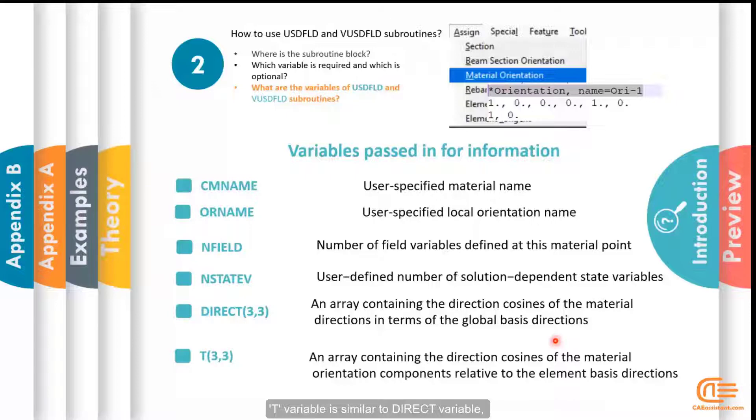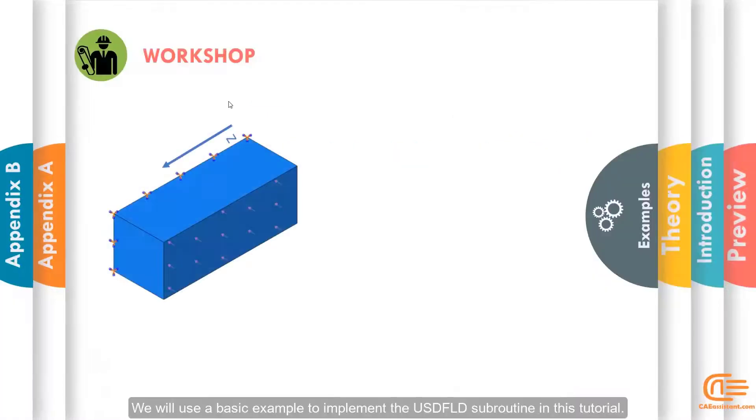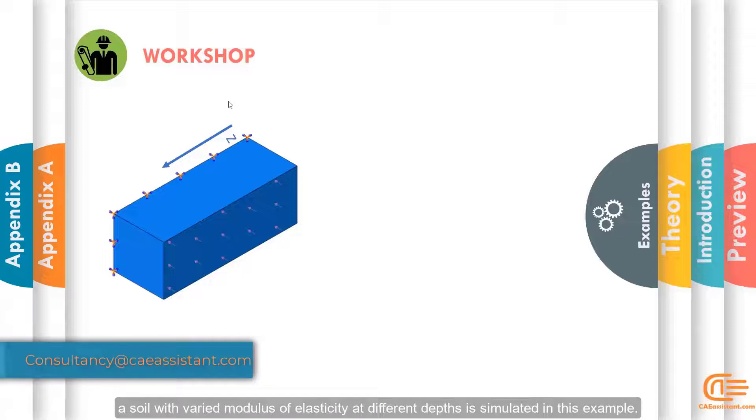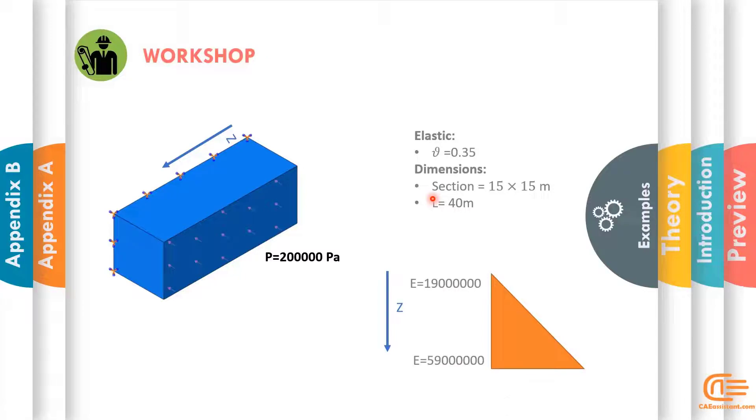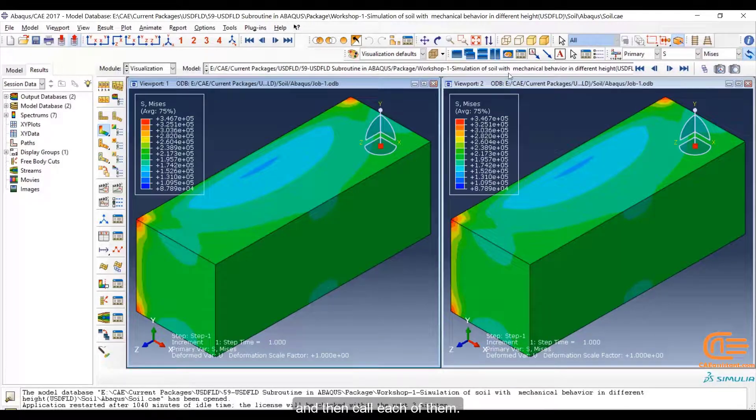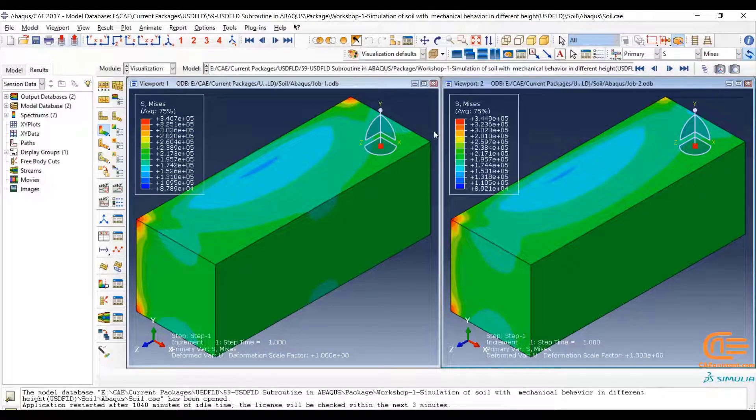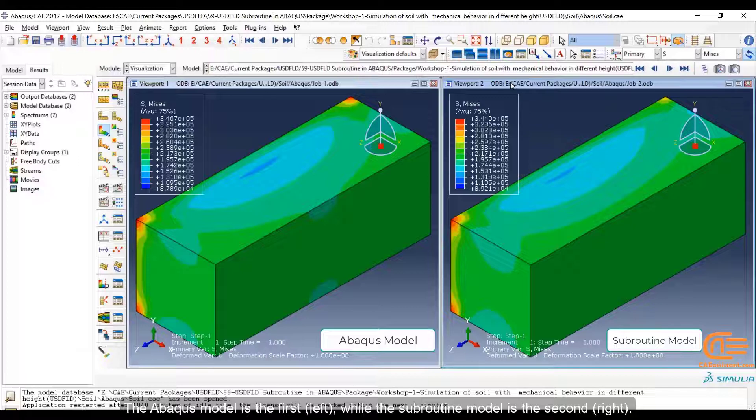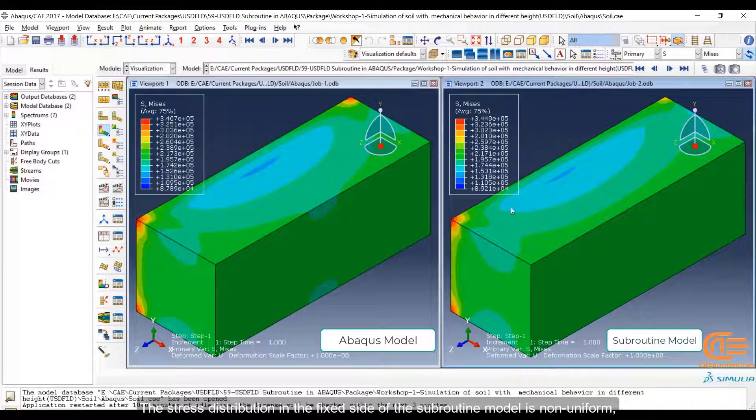T variables is similar to direct variable except that the direction of the elements is different. To implement the USDFLD subroutine in this tutorial, under compressive force, a soil with varied modulus of elasticity at different depth is simulated in this example. The Abaqus model is the first on left while the subroutine model is the second on right. The stress distribution in the fixed side of the subroutine model is non-uniform.